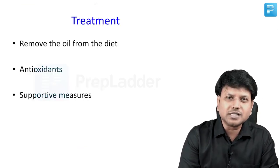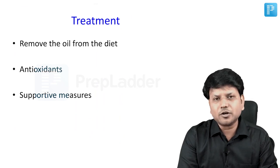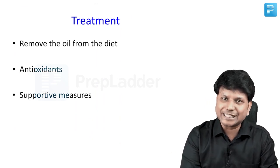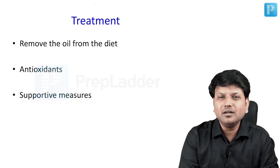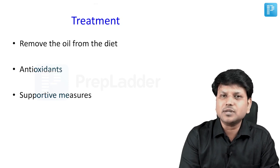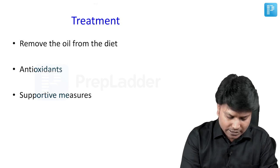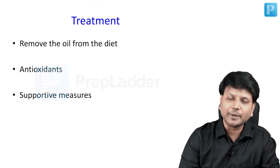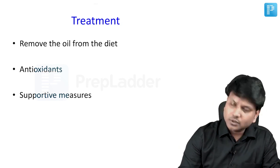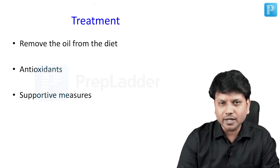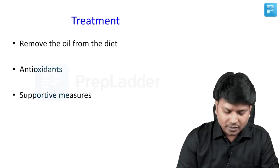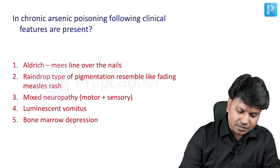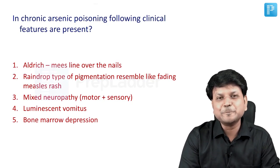Treatment of epidemic dropsy: remove the adulterated oil from the diet, provide supportive measures, and give antioxidants like Vitamin C to help the patient. Remember: sanguinarine and dihydrosanguinarine are the two important toxins, and the plant is Argemone mexicana.